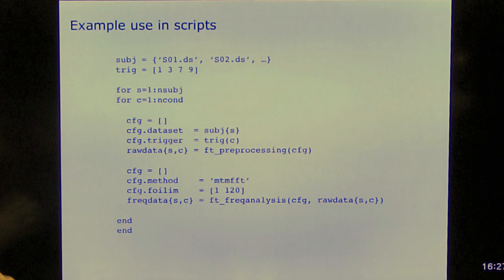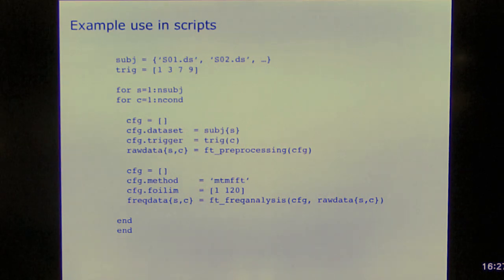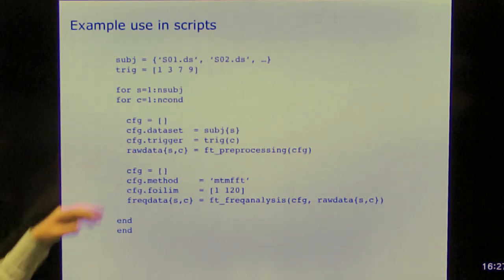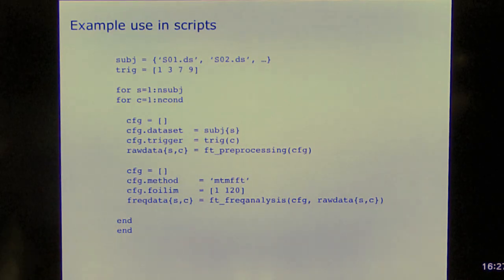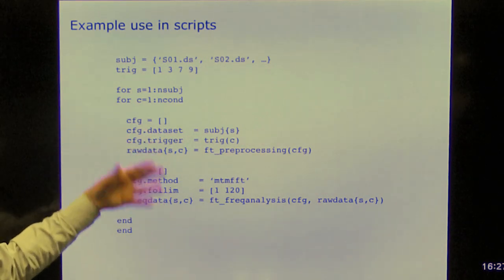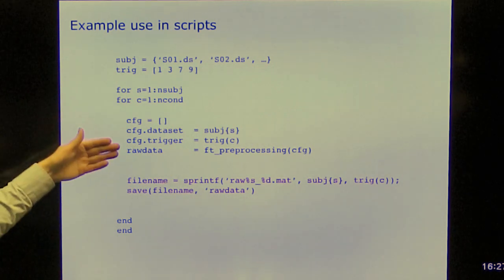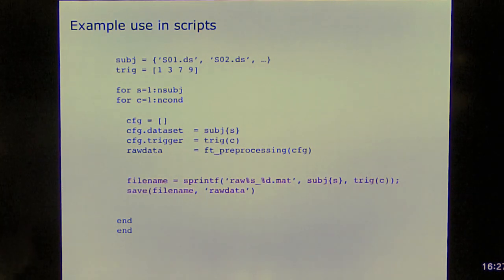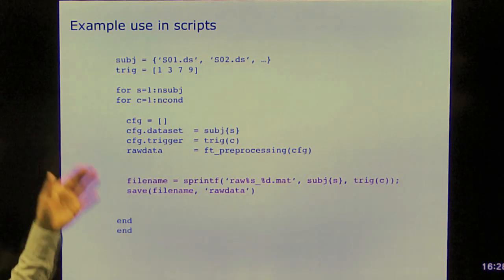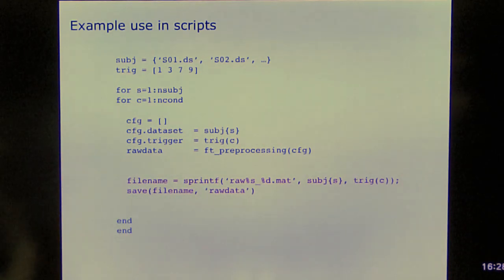This is something that you would start in the evening, and then the next morning you would find that your computer ran out of memory probably. Because what I'm doing here, I'm storing everything in the cell array, and especially with MEG data, this is large. So that means that it just doesn't fit. All of these data sets don't fit in memory. So what we typically do is we would do something like this. So we would write the data to disk and then continue with the next subject. And this would run through the night and then the next morning you would find all the files nicely on your hard disk.